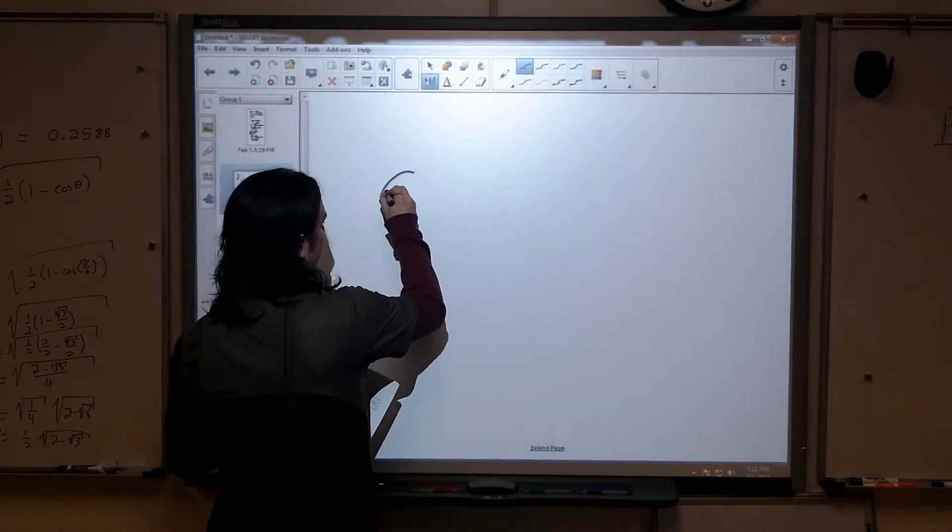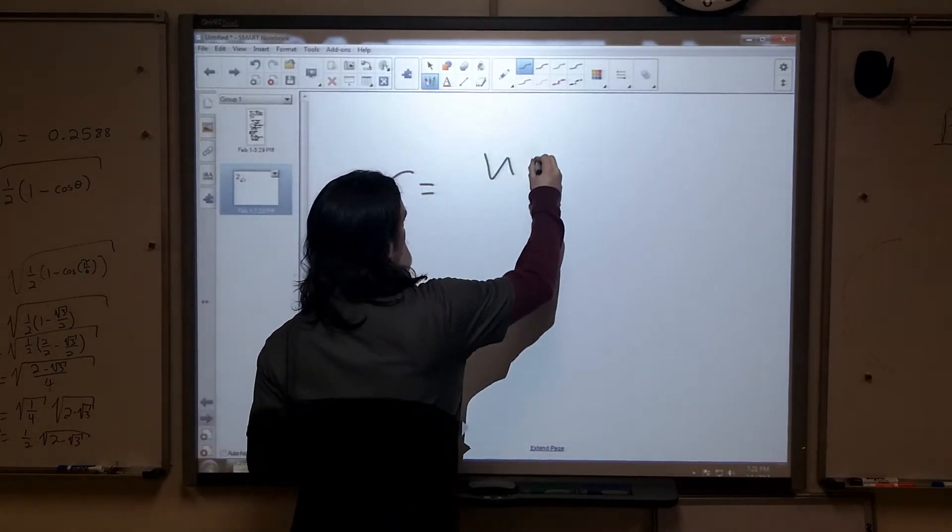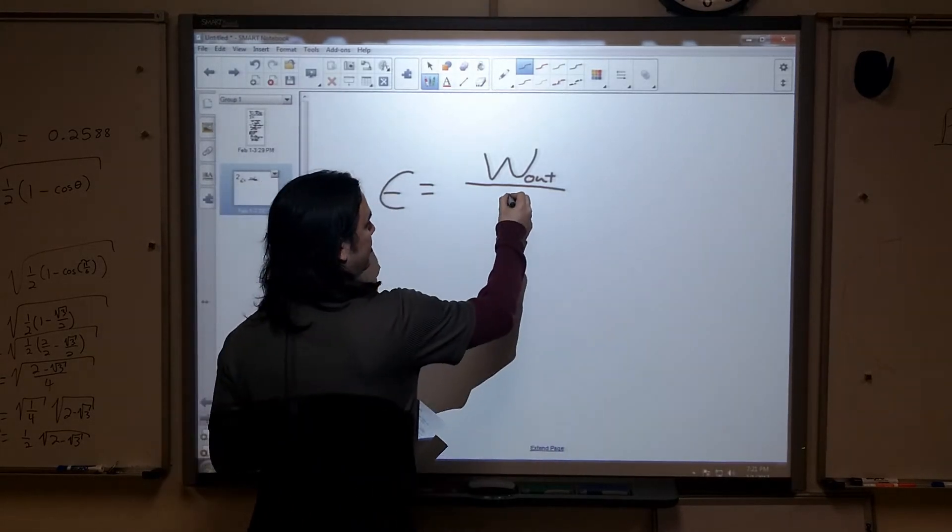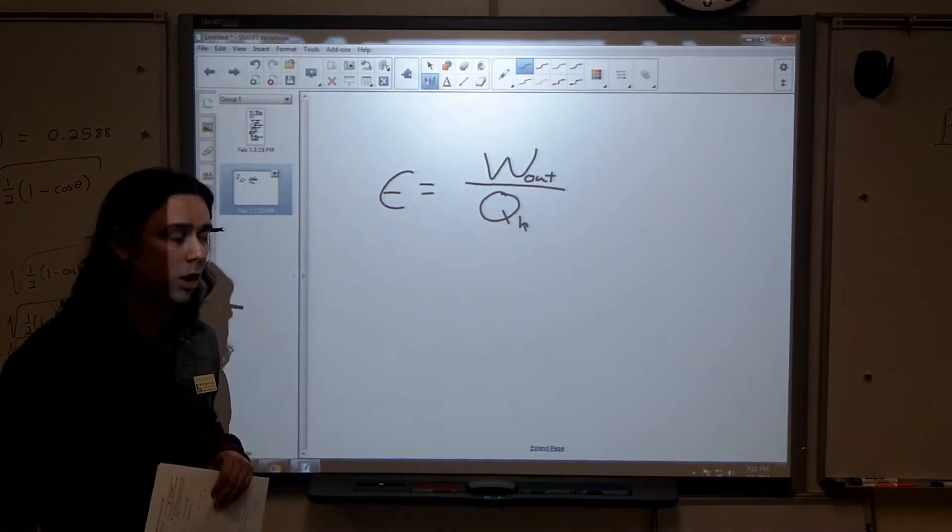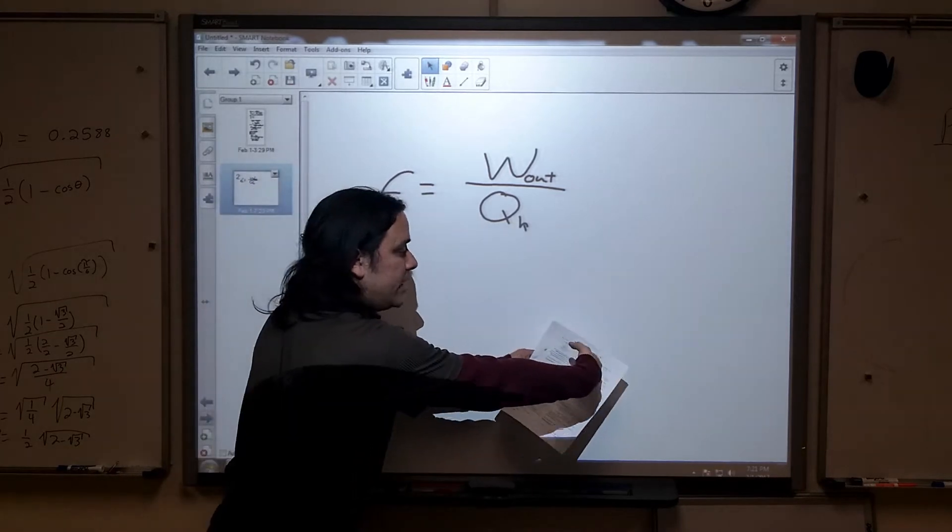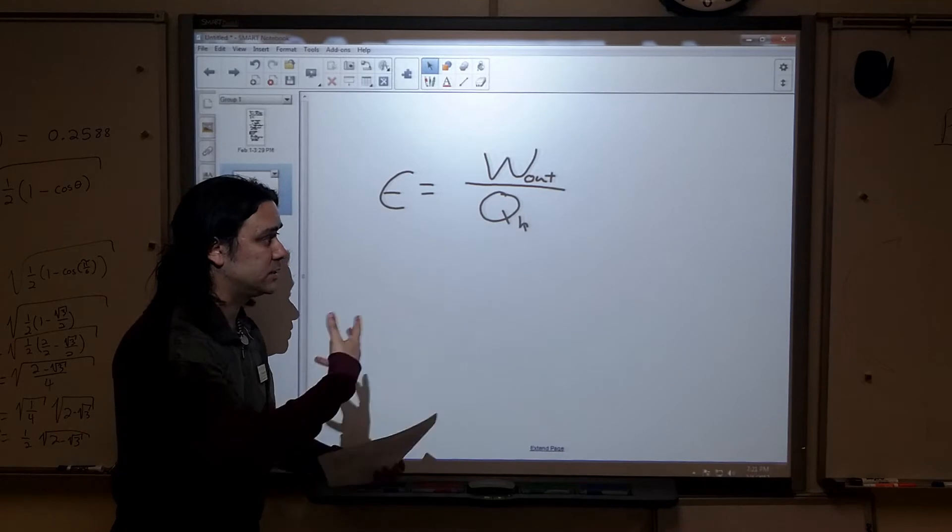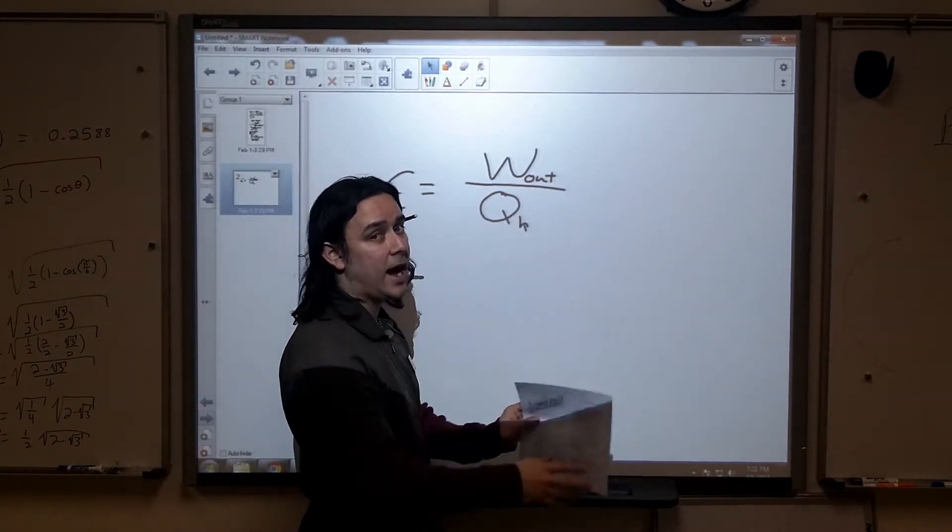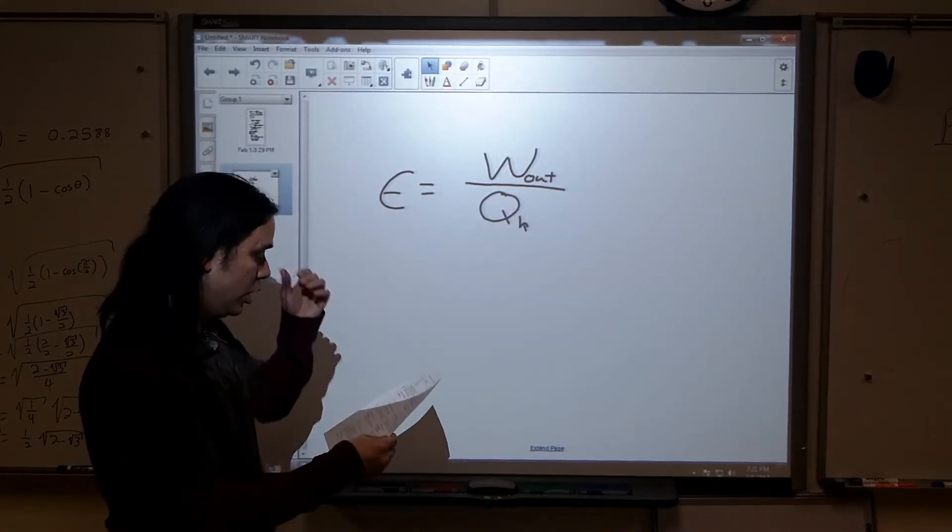Okay, well our efficiency is equal to the work that we get out of the engine, the work out, divided by the heat absorbed from the hot reservoir. Now remember, the idea of the engine is it takes energy in in the form of heat from a hot reservoir. It does some cycles on it where it produces some work and then kicks out some waste heat into the low reservoir.